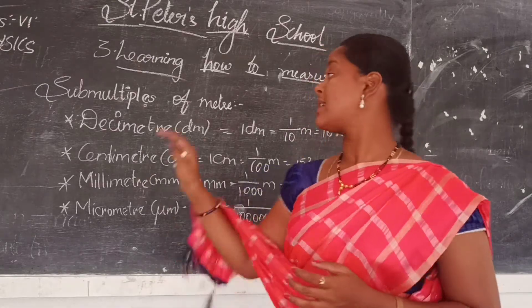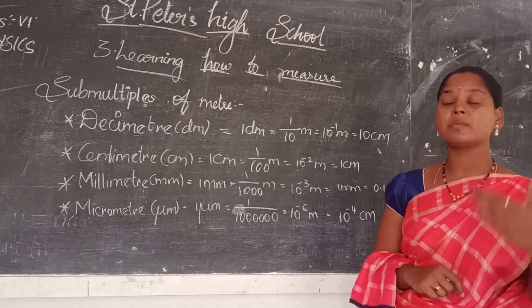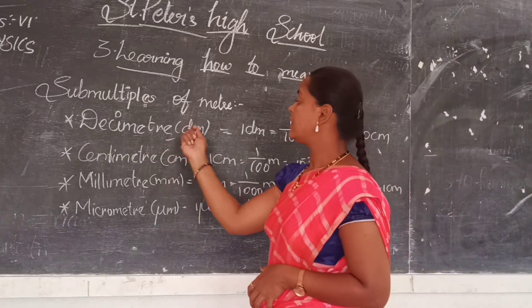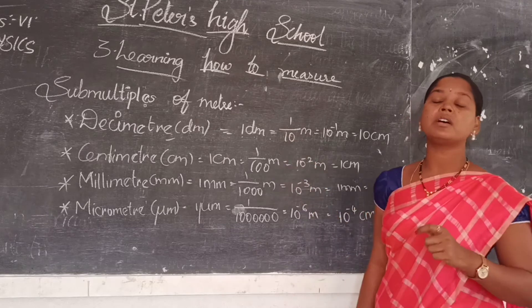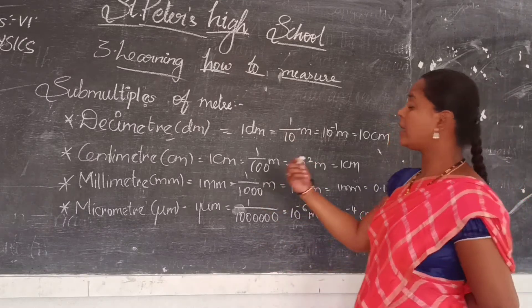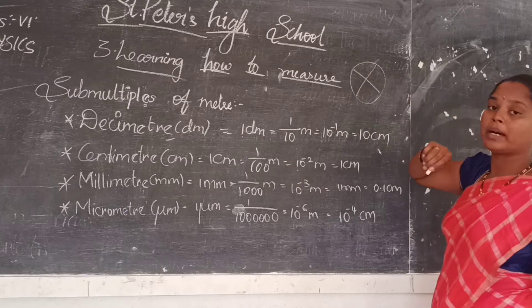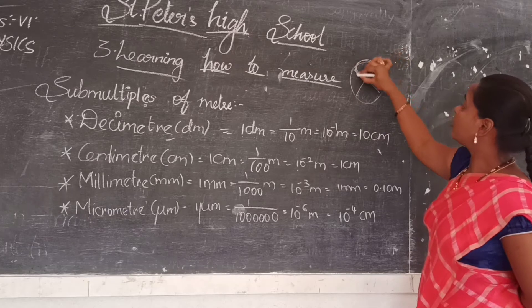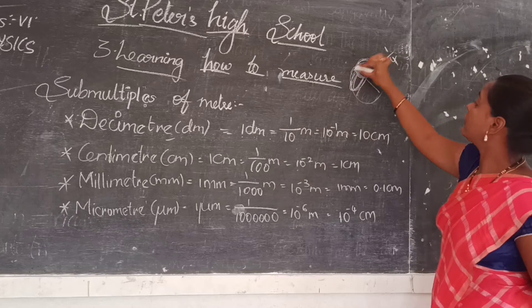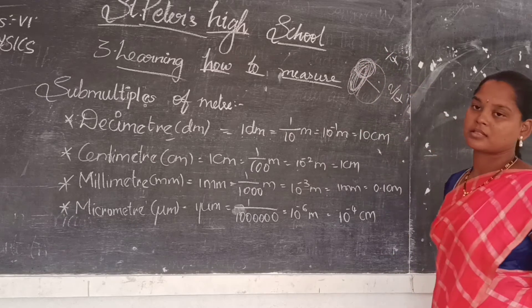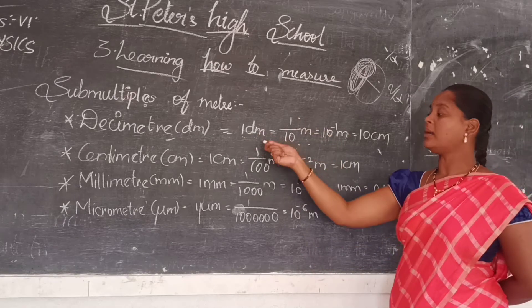Now we will learn about sub-multiples of meter. Multiples means greater than the meter; sub-multiples means less than the meter. The first one is the decimeter. One decimeter equals 1/10th part of the meter. For example, if something is divided into 4 parts and I cover 2 parts, it is 2/4 parts. In the same way, 1/10th part of the meter is called 1 decimeter.